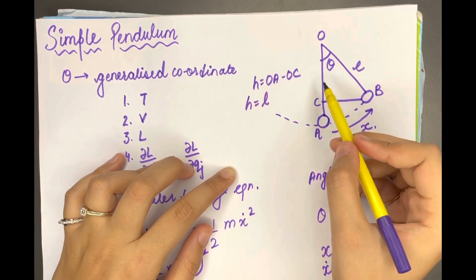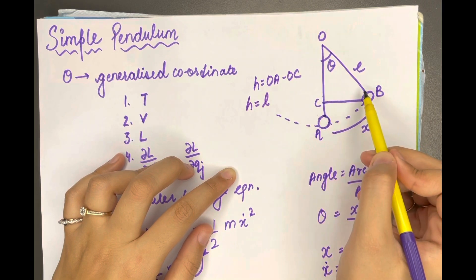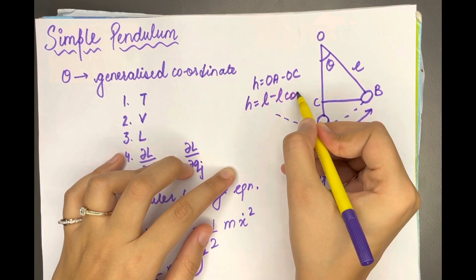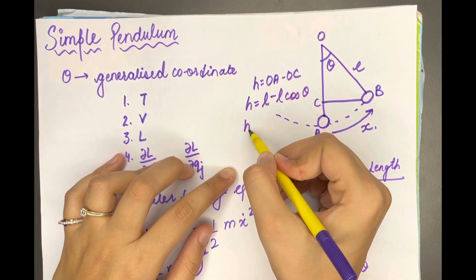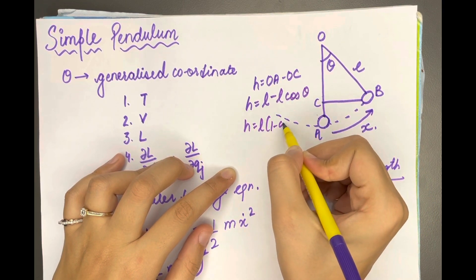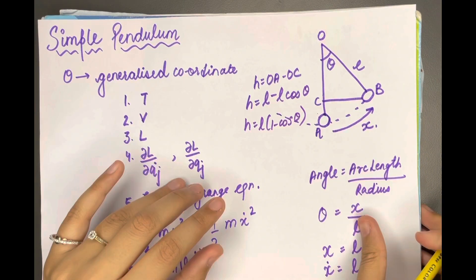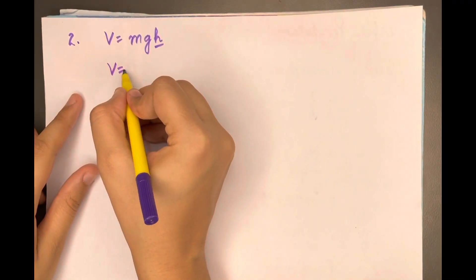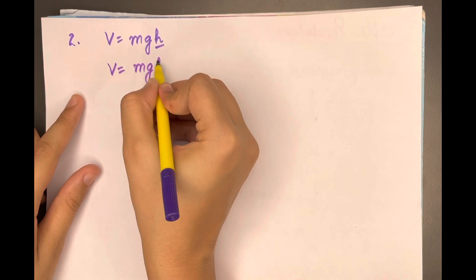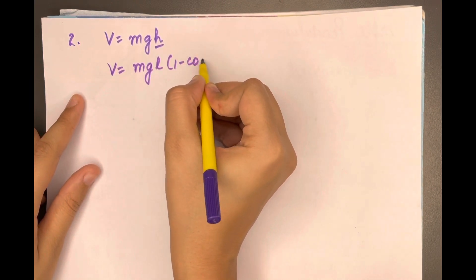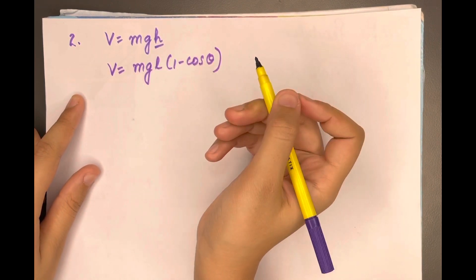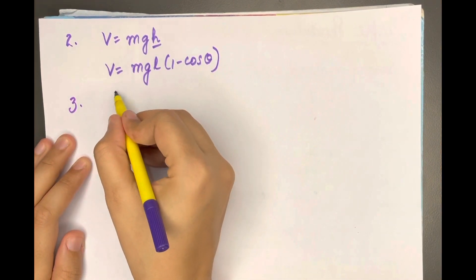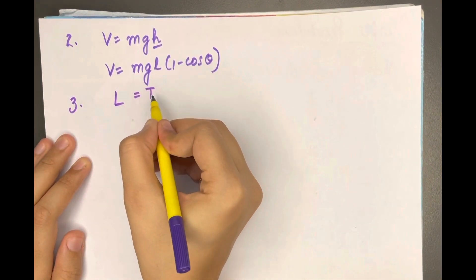OC is l·cosθ, so h equals l minus l·cosθ, which gives h equals l(1 − cosθ). Substituting, potential energy V equals mgl(1 − cosθ). Now our third step is to calculate the Lagrangian L, which is T minus V.